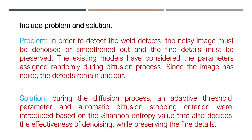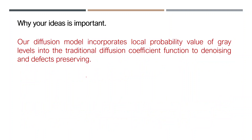The third important point is why your ideas are important. You can write more sentences on how your ideas are important to the readers and researchers. Here I am writing: 'Our diffusion model incorporates the local probability value of gray levels into the traditional diffusion coefficient function for denoising and defect preserving.' The target is denoising and defect preserving. I am incorporating the local probability value of gray levels into the traditional diffusion coefficient — this is the main important contribution in the research paper.